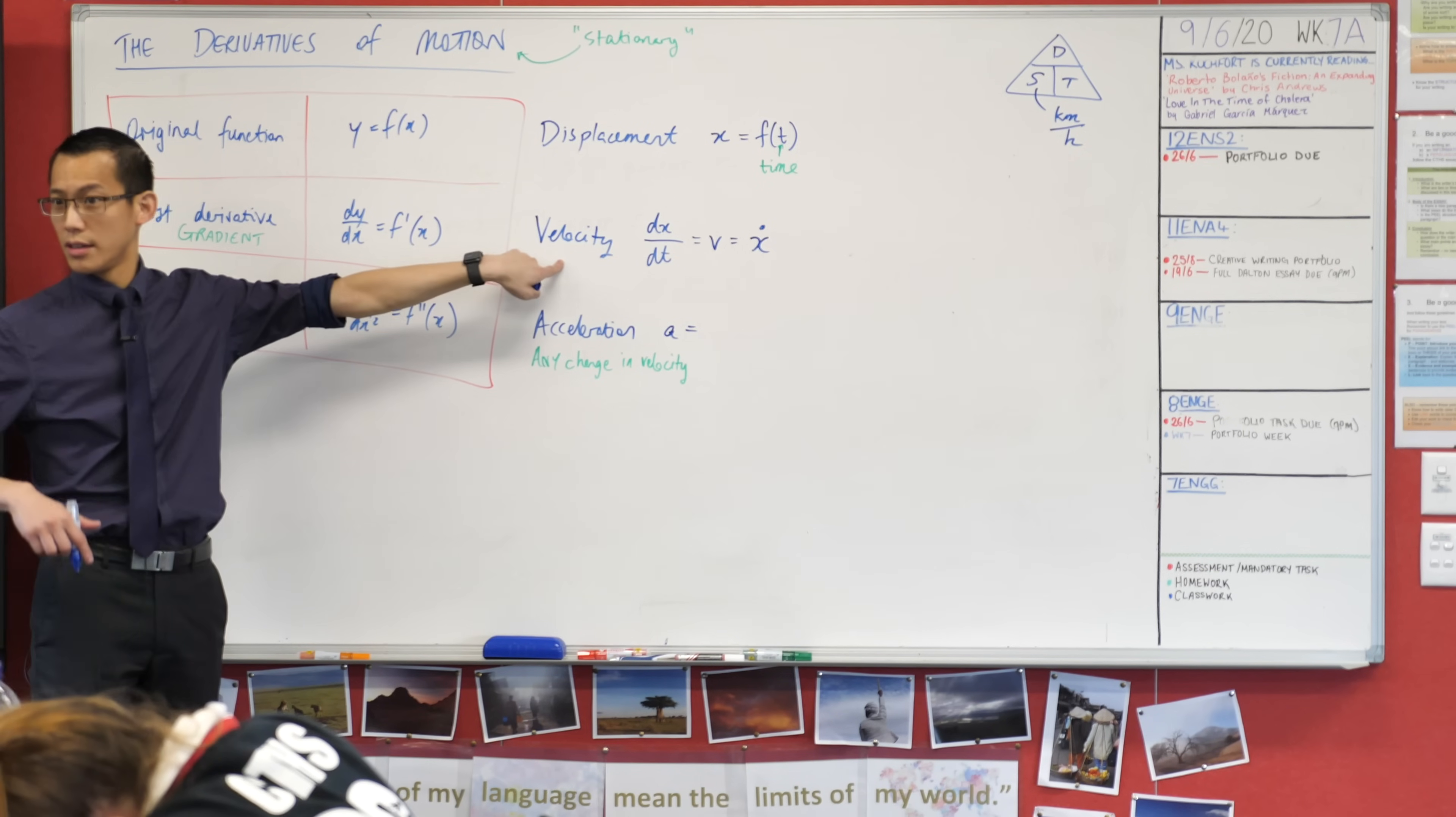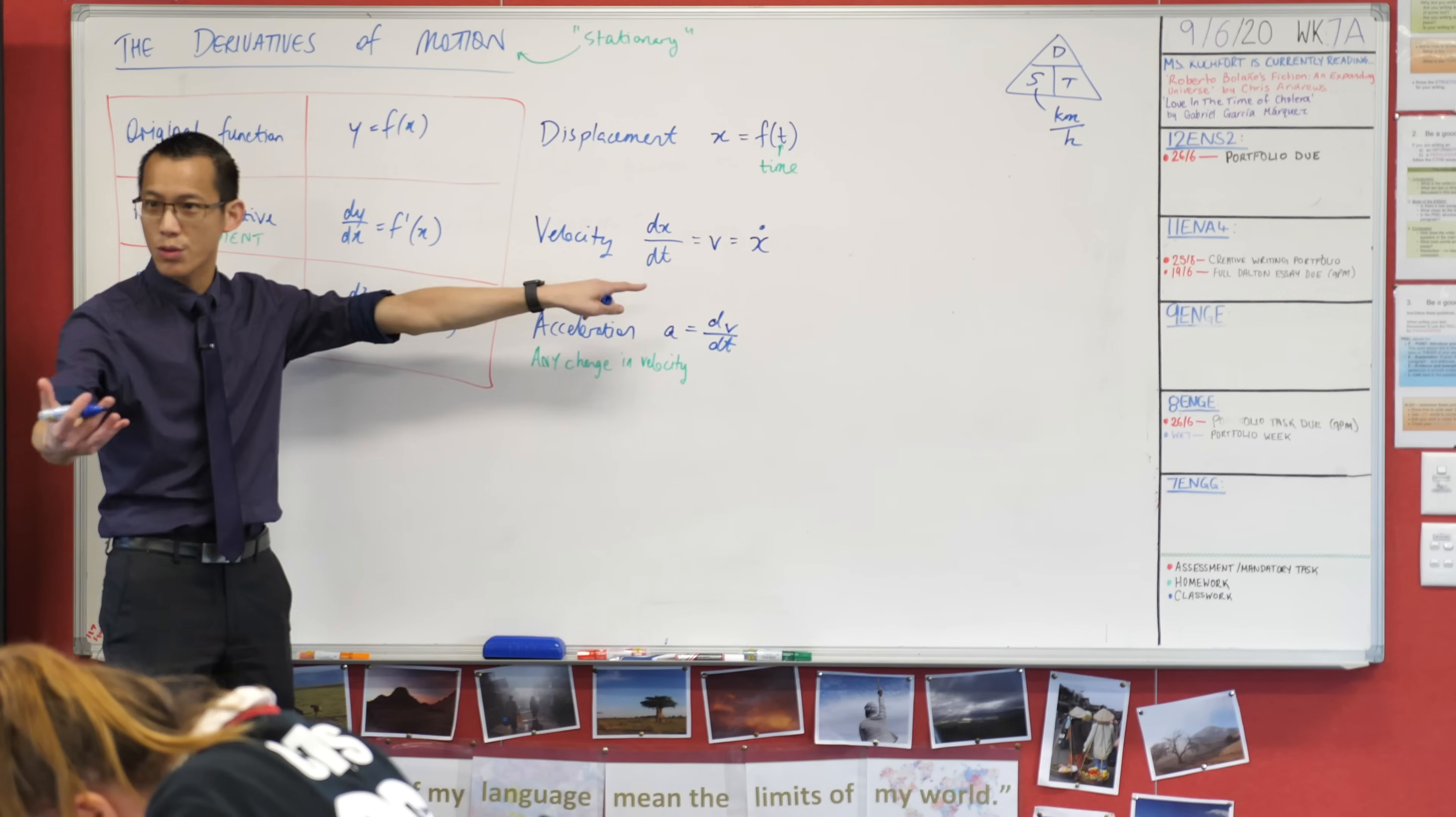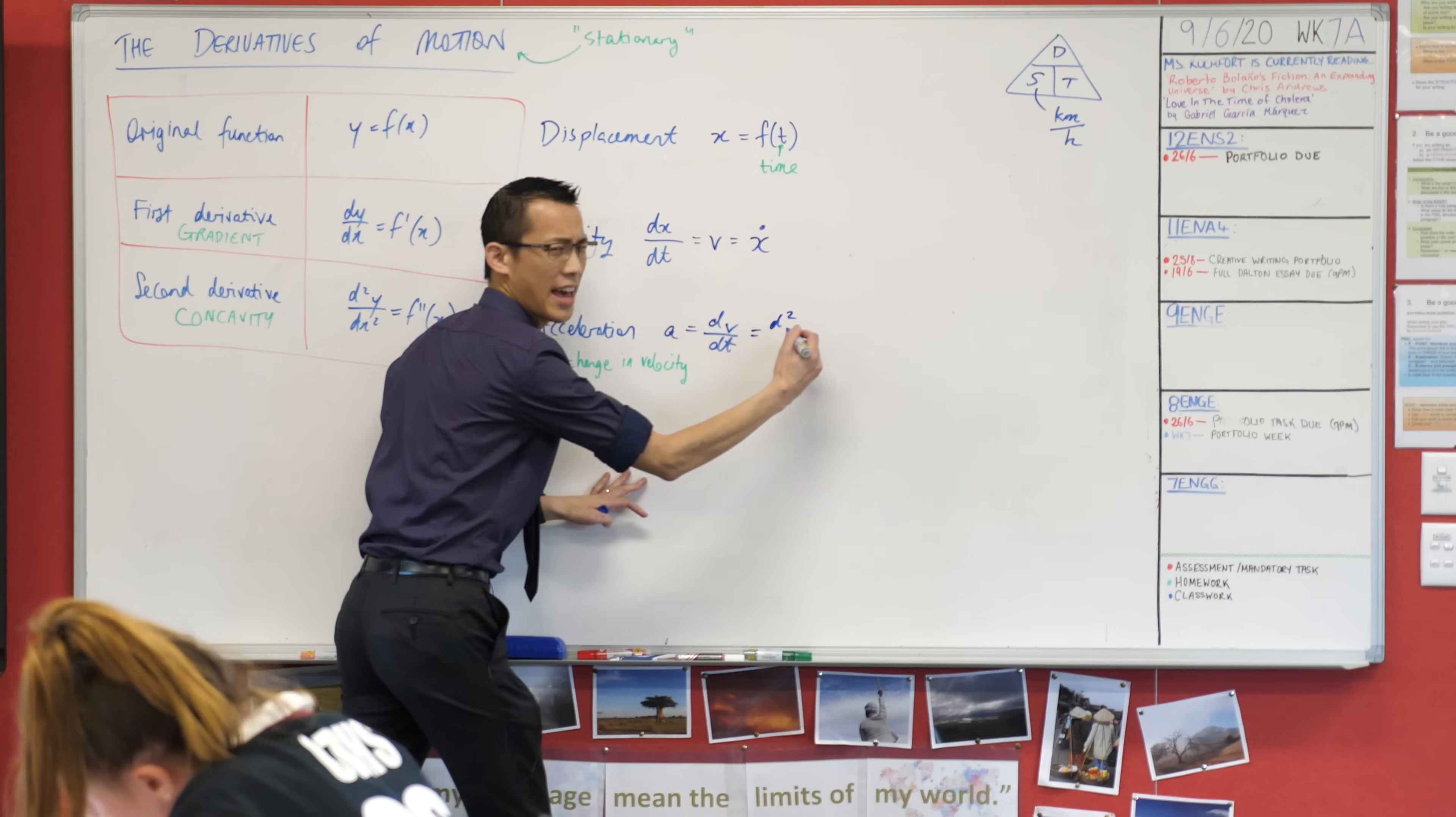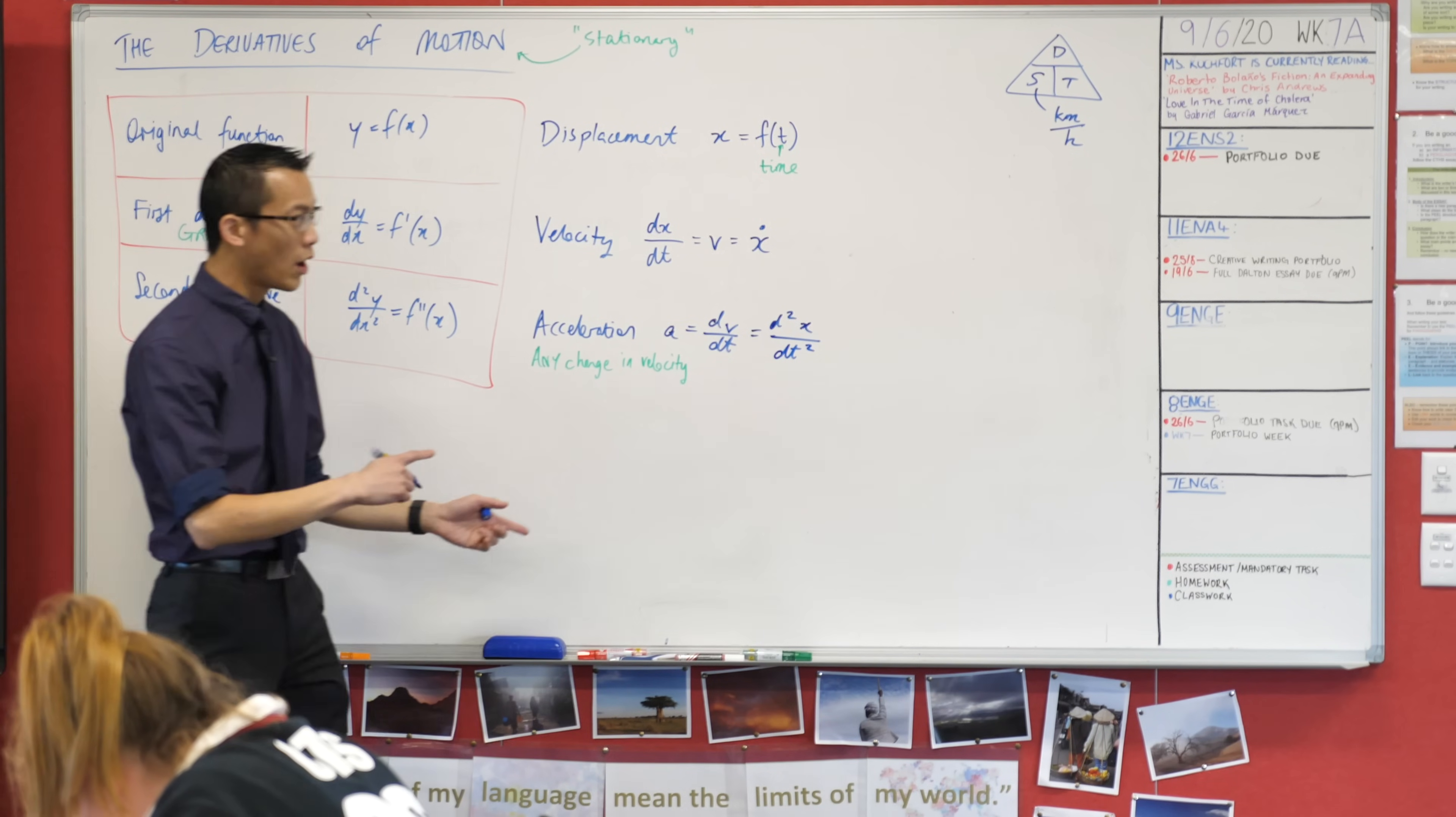It's what happens when you differentiate velocity, so I could write it as dv over dt. You take this thing v and differentiate it with respect to time. But since v is its own derivative, what we're really looking at is the second derivative of the thing you started at the top with. Another way of writing exactly the same thing: d squared x on the bottom dt squared.